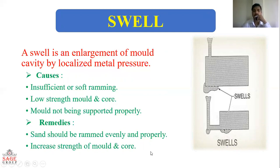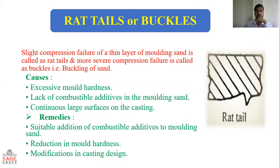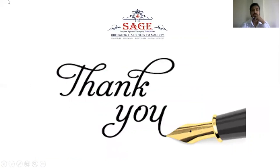The next defect is rat tail or buckles. Slight compression failure of a thin layer of molding sand is called a rat tail, and a more severe compression failure is called a buckle. Causes: excessive mold hardness, lack of combustible additives in molding sand, and large continuous surface of the casting. Remedies: add suitable combustible additives (about 0.7%) to molding sand, reduce mold hardness, and modify casting design.